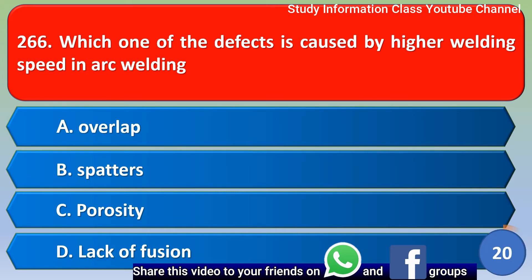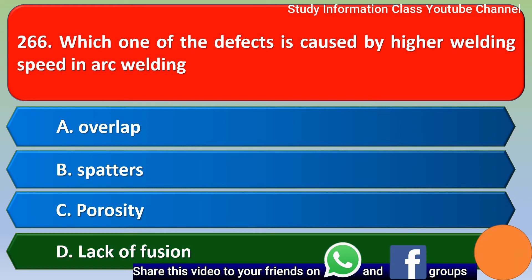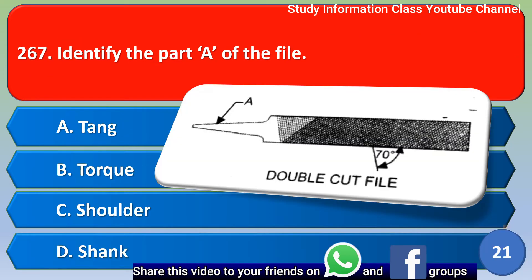Next question: which one of the defects is caused by higher welding speed in arc welding? Option A: overlap, Option B: spatters, Option C: porosity, Option D: lack of fusion. The right answer is Option D, lack of fusion.